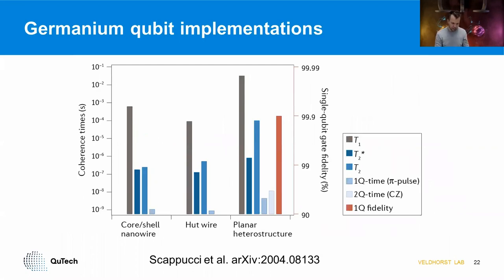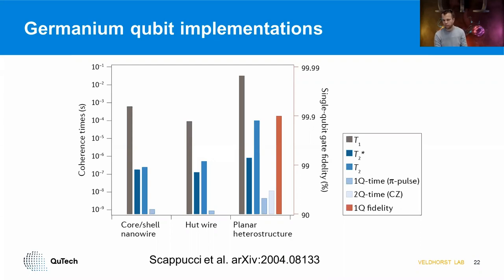Comparing our results to different germanium implementations on a log-log scale of coherence time versus fidelity, planar germanium is really starting to stand out compared to other germanium platforms. The ability to define structures in a 2D planar geometry leads to a very clean interface and these very encouraging results.